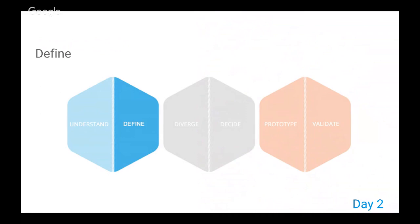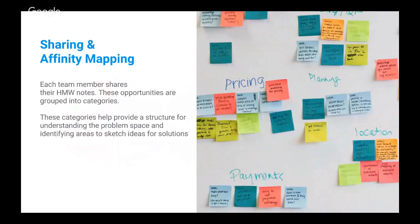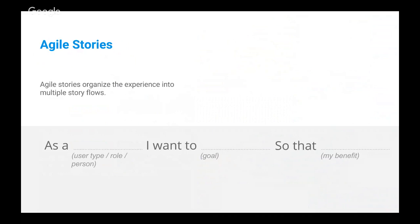Day one is all about knowledge sharing — just getting people thinking and getting information out there. In day two, you start defining what the problem space actually is: what pain points your users are feeling. You take the 'How Might We' notes and put them on a whiteboard. Everyone describes their notes and sticks them up, clustering them into categories. You naturally find common themes — things that are more interesting to focus on. You can also write these as agile stories: 'As a particular type of user, I want to do such and such so that I can get this benefit.' This puts you in the mindset of empathizing with your users.